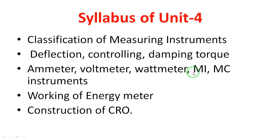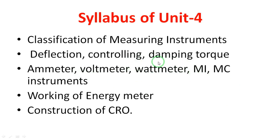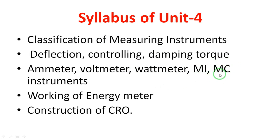Today we will discuss the moving iron instrument. There are only two types of instruments: moving iron and moving coil. Moving coil instruments are used as galvanometers, while moving iron instruments can be used as voltmeters and ammeters. The construction is somewhat different, which I will explain. Moving coil instruments are used for DC.